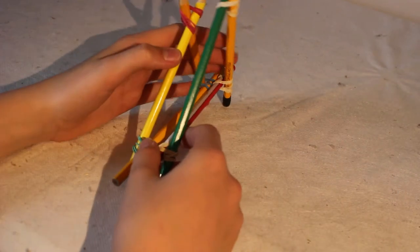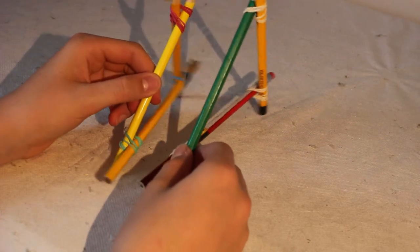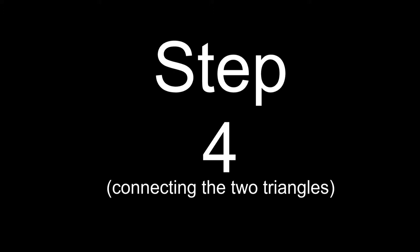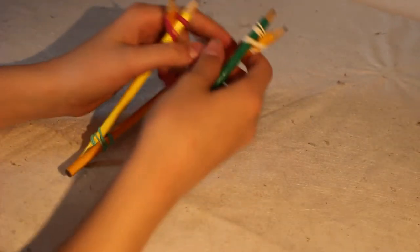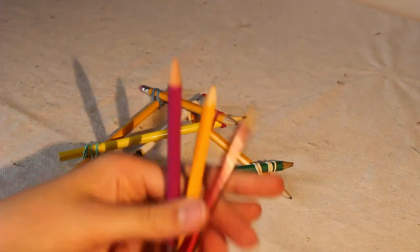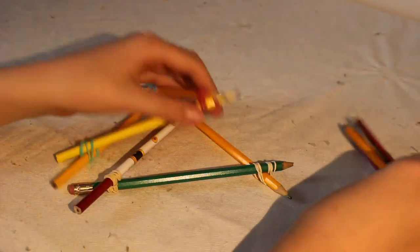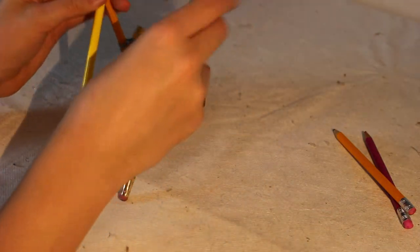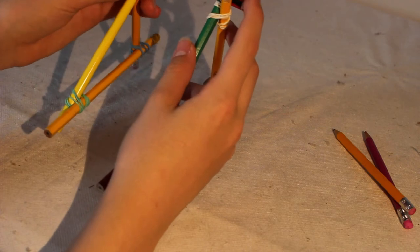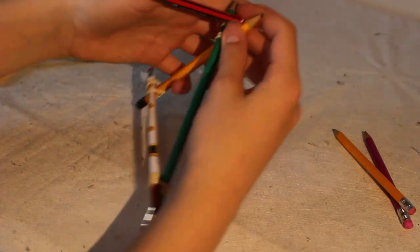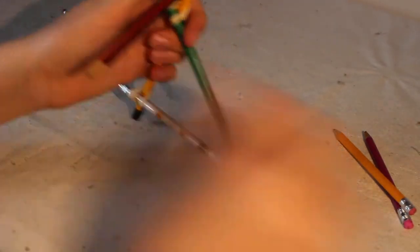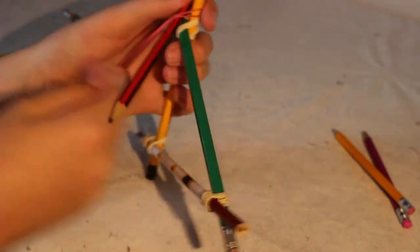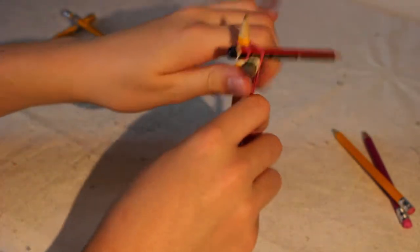So now we're going to make the beams that go across. Now what we're going to do is take the three smallest pencils that we set aside earlier and we're going to connect these two triangles together like this. So with one triangle just find where they connect and put it between them. And then just take an elastic band and just wrap it round so that it stays on.